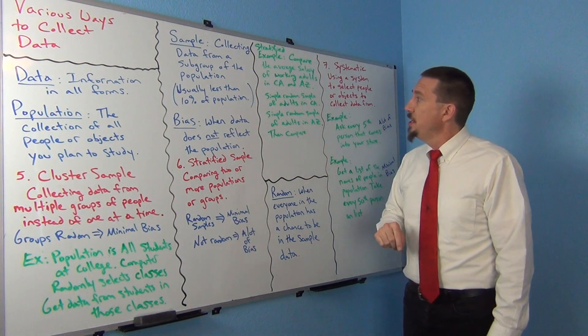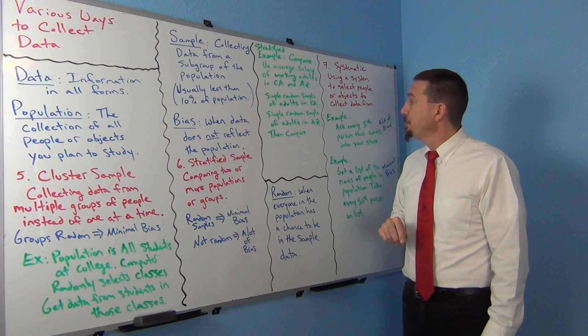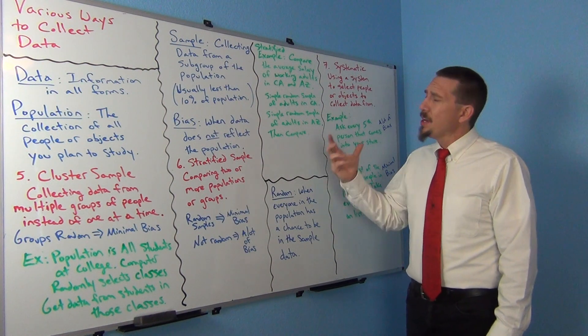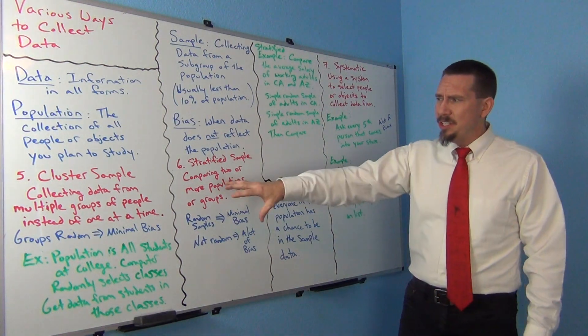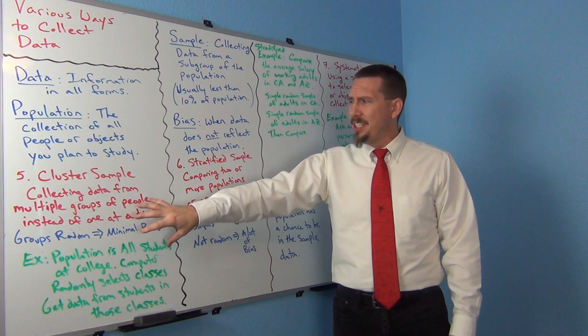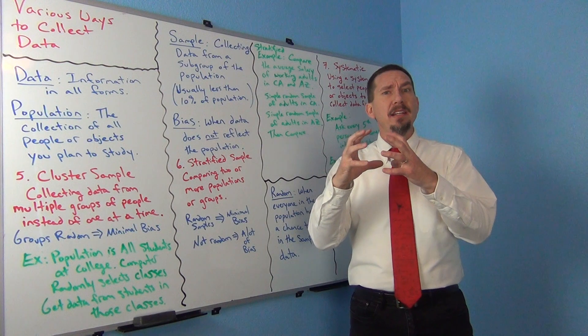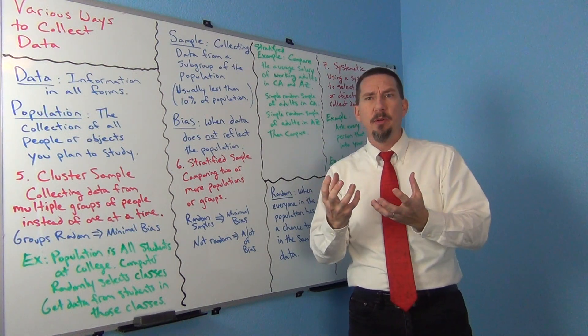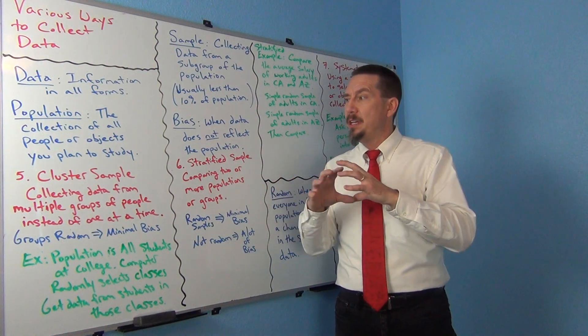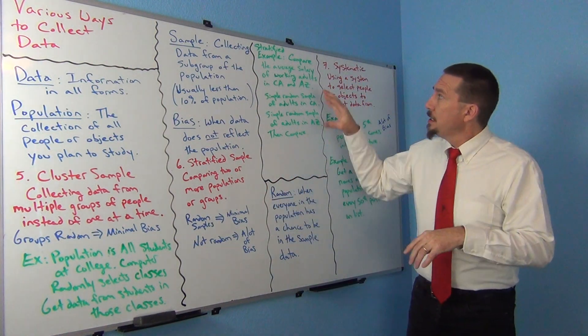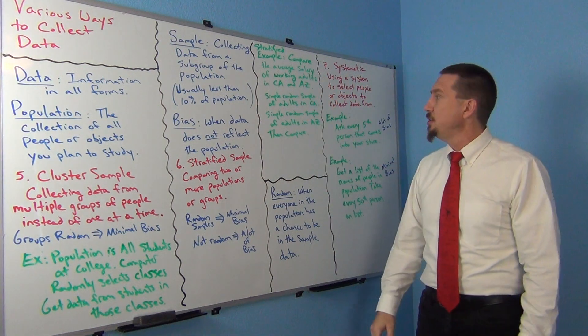As long as they're decently large random samples you're pretty okay. So think of a stratified as a comparison study. Who am I trying to compare one thing to another? Clustering usually is just one population you're dealing with and you're just trying to get data from just one sample from that population, but you're collecting data from groups of people in that one population instead of one at a time.